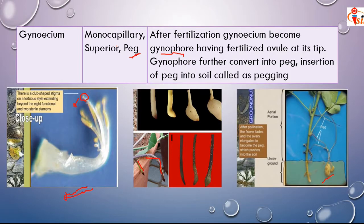The gynoecium is monocarpellary and has a club-shaped stigma at the tip — this is the identification mark for the gynoecium. It is a slender, needle-like structure present inside the bunch of 10 anthers, enclosed inside the staminal column.